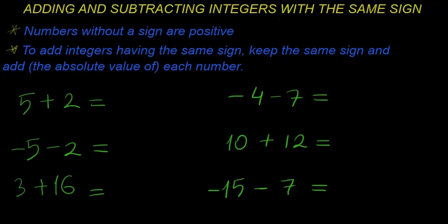Hello everyone. In this lesson we are going to be learning adding and subtracting integers with the same sign. Before we start, let's look at two important rules. The first one: numbers without a sign are positive. For example, if we have the number four with nothing in front of it, that is positive four.